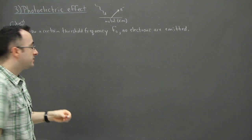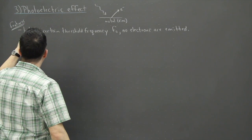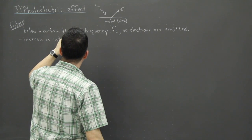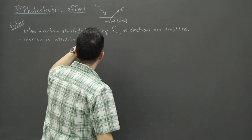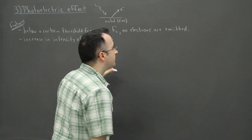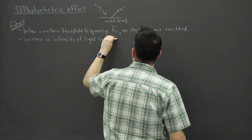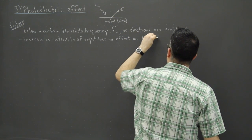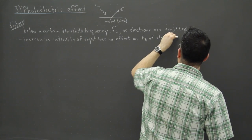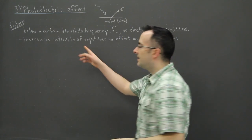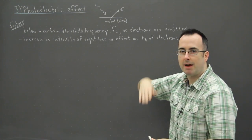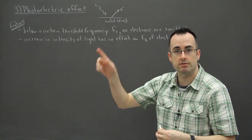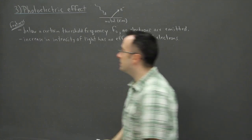Okay, so also though, an increase in intensity of light has no effect on the kinetic energy of the electrons. So again, we thought that if you made the light brighter, once you have this effect happening, if you just made the light brighter you should get faster electrons or something. But it turns out nope, increase in intensity had nothing to do with it.